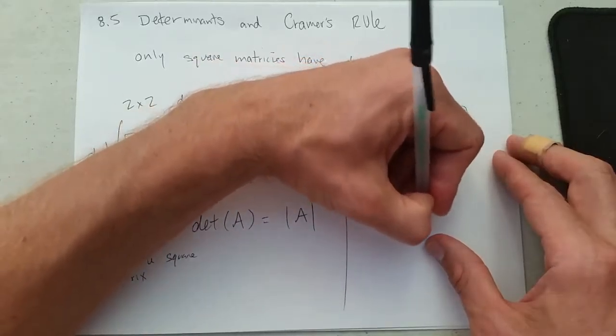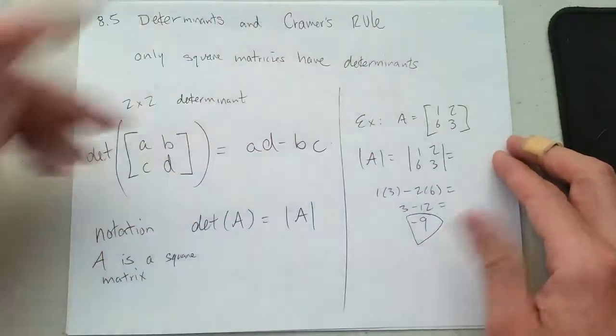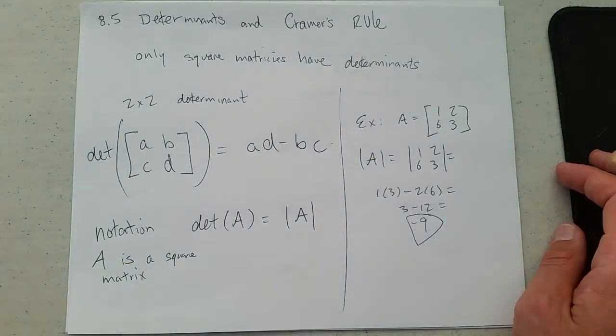We'll do this determinant real quick. 1 times 3 minus 2 times 6, and 3 minus 12 is minus 9. That's all there is to a 2 by 2 determinant.